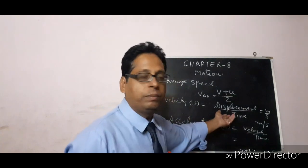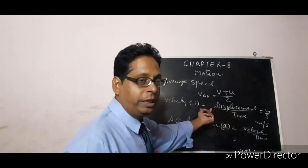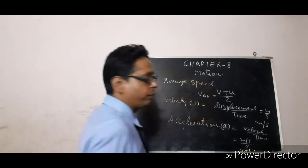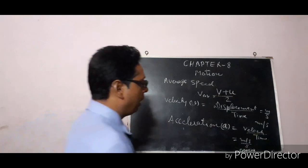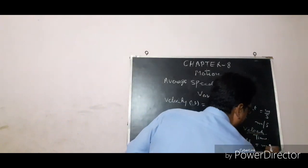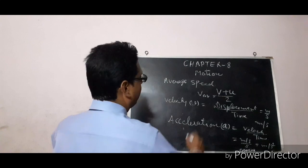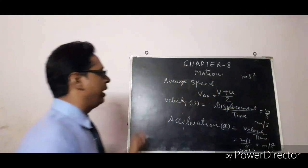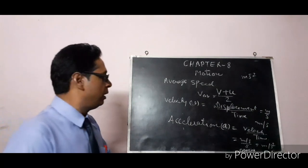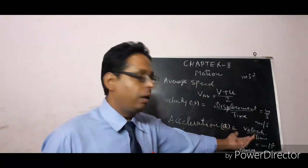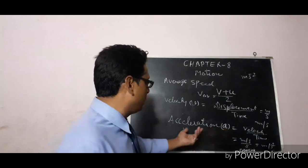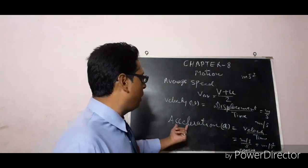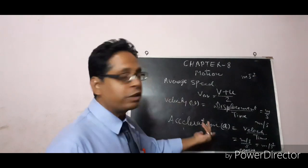For the units of acceleration: velocity has units of meter per second, and we divide by second, so the unit of acceleration is meter per second squared, written as m/s².